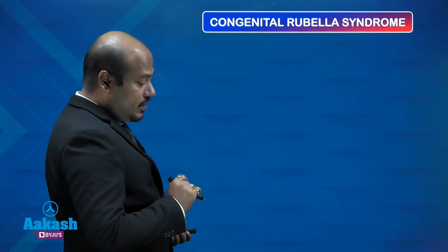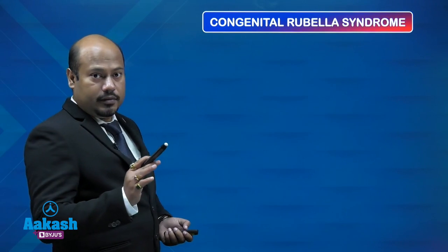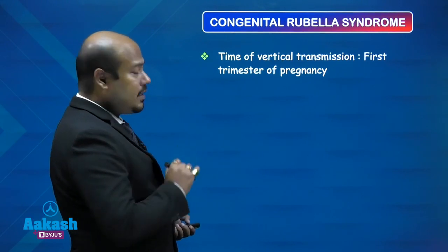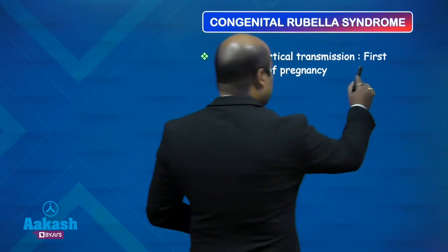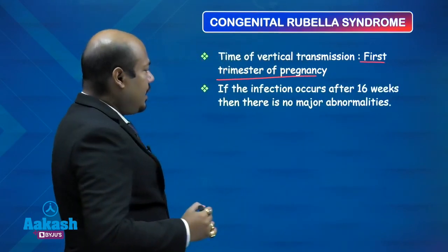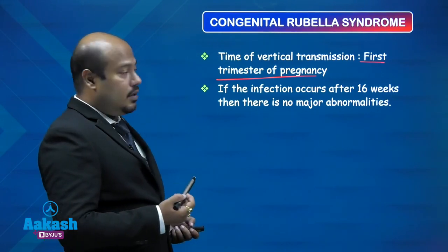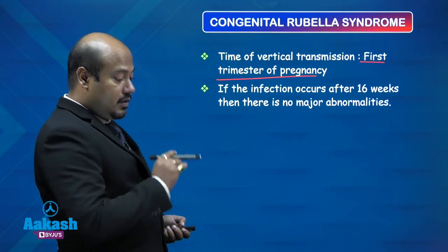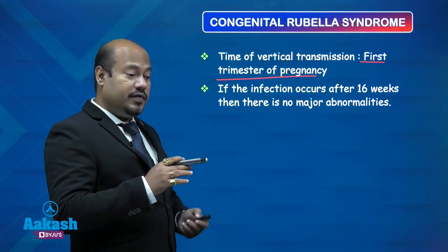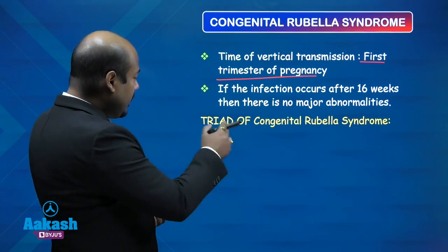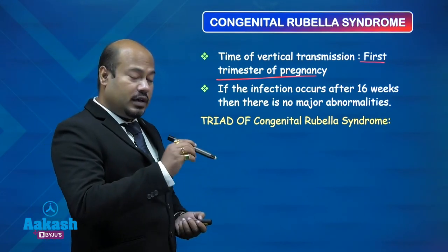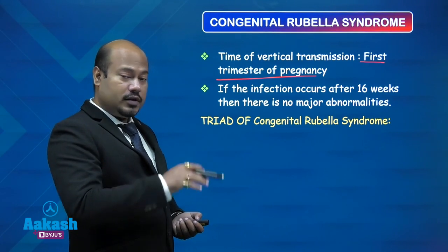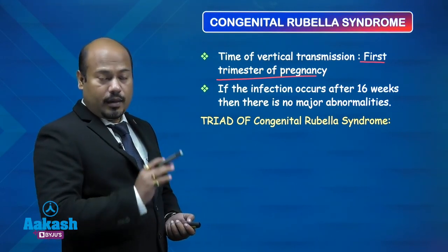Congenital Rubella Syndrome (CRS): rubella virus can transmit vertically from mother to fetus across the placenta. The critical time for vertical transmission is the first trimester of pregnancy. If infection occurs after 16 weeks, there are no major abnormalities. Major defects occur in the first trimester because rubella virus is a teratogen — it can cause fetal anatomical abnormalities. A common congenital heart defect resulting from rubella transmission is patent ductus arteriosus (PDA).